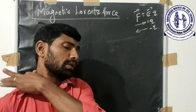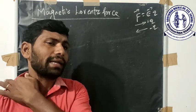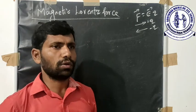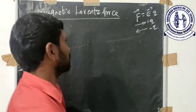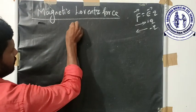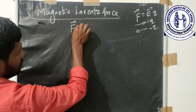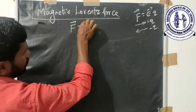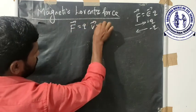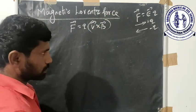If a magnetic field exists, the charge will be affected and will experience a force. The Lorentz force formula is: F vector is equal to Q into V vector cross B vector.